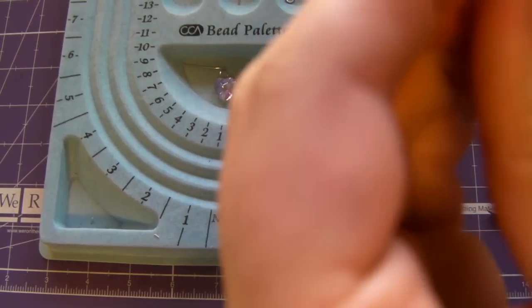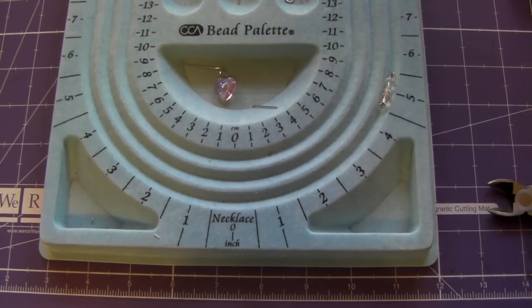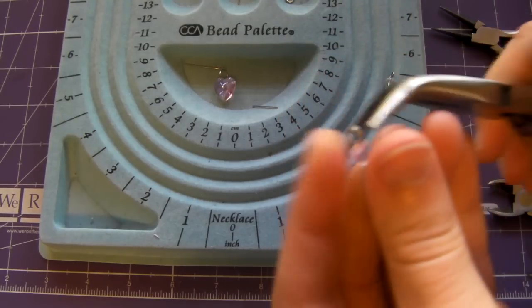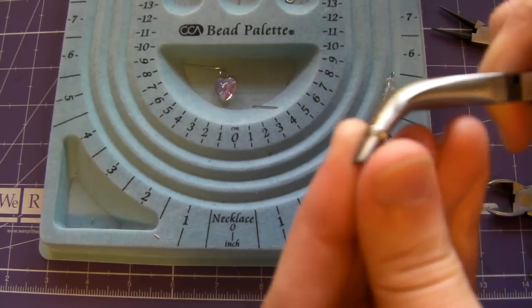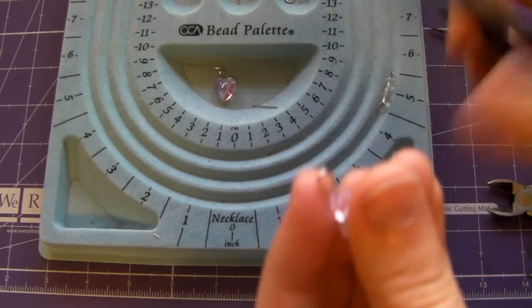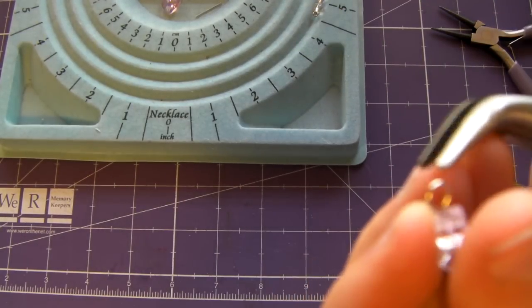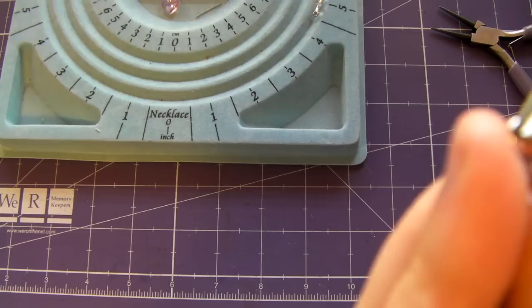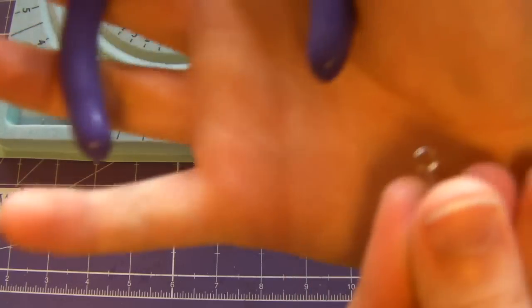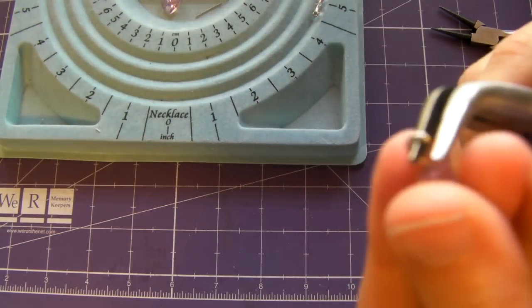Round nose pliers. Then just kind of make it look good. Close the loop. So I'm just adjusting mine to where I like it.